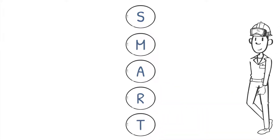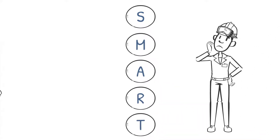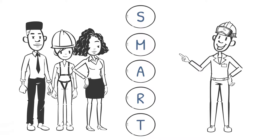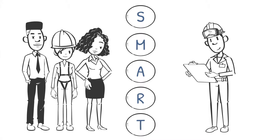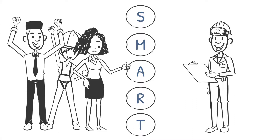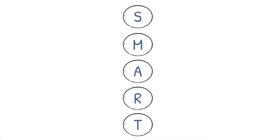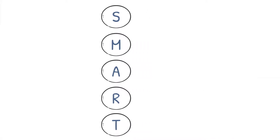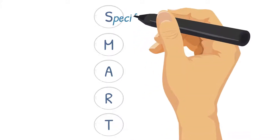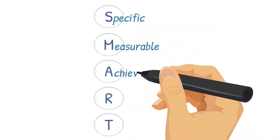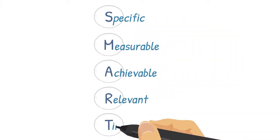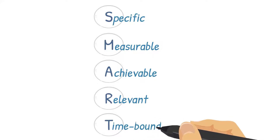There are lots of different interpretations of SMART, which doesn't help, but once you establish a shared language, SMART goals can be used by everyone to improve the effectiveness of any task. We like to define SMART as tasks that are specific, measurable, achievable, relevant, and time-bound.